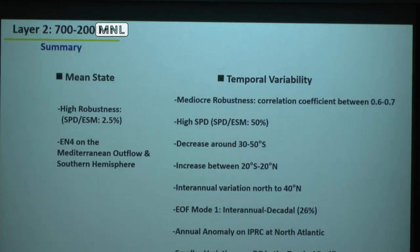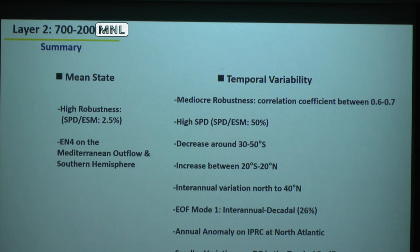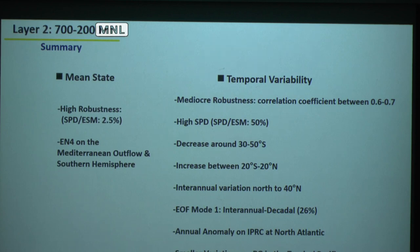Summary for 700 to 2000 meters: the mean state is still doing good. EN4 has some discrepancies related to Mediterranean outflow and the Southern Hemisphere, probably because it has historical data there. For the variability, robustness is only mediocre — the time series correlation is around 0.6 to 0.7. For the zonal mean, we have a decrease around 30 to 50 south, an increase between 20S to 20N, and inter-annual variation north of 40. The first mode is inter-annual to decadal and we don't know what that is. We have an annual anomaly on IPRC at the North Atlantic, and RG has smaller variation in the tropical Pacific.